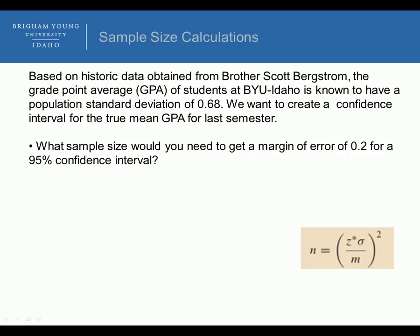Here's the formula on the bottom right. We take the critical value relative to the 95% confidence interval, which is 1.96, times our standard deviation 0.68, divided by our desired margin of error 0.02. We multiply and divide all that together, then square that number, and we get 44.41. We always round up to get the sample size calculation, so we round up to 45, and that would be our sample size to get the desired margin of error of 0.02.